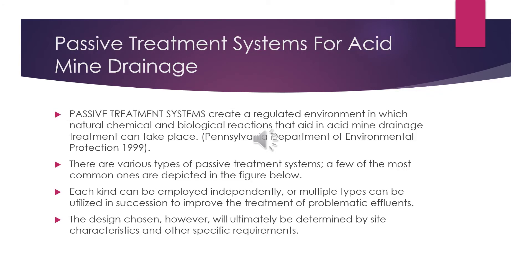Passive treatment systems for acid mine drainage create a regulated environment in which natural, chemical, and biological reactions that neutralize acid mine drainage can take place. There are various types of passive treatment systems. Each kind can be employed independently, or multiple types can be utilized in succession to improve the treatment of problematic effluents. The design chosen will ultimately be determined by site characteristics and other specific requirements.